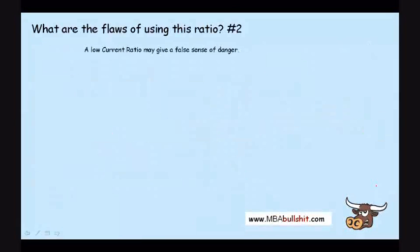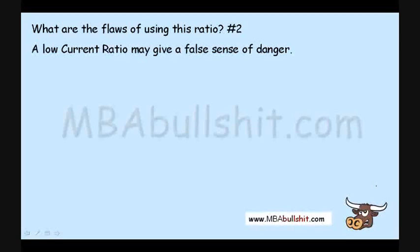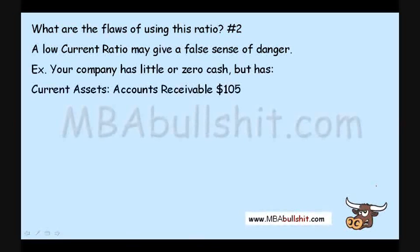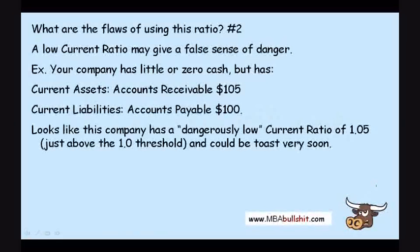The second flaw: a low current ratio supposedly means your company is at risk, but a low current ratio may give a false sense of danger. For example, let's say your company has accounts receivable of $105 as current assets and accounts payable of $100 as current liabilities, giving a dangerously low-looking current ratio of 1.05 — just slightly above the 1.0 threshold — indicating your company could get into trouble very soon.